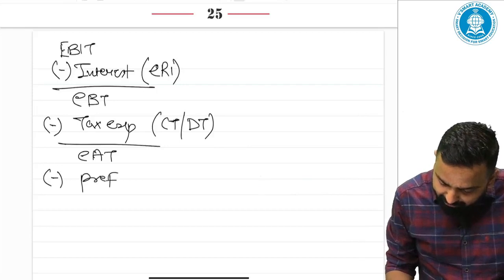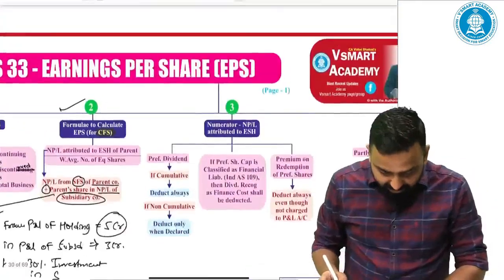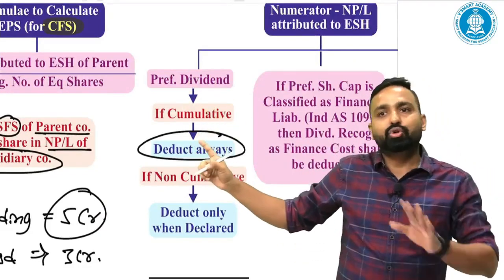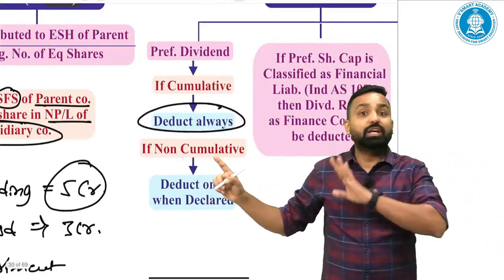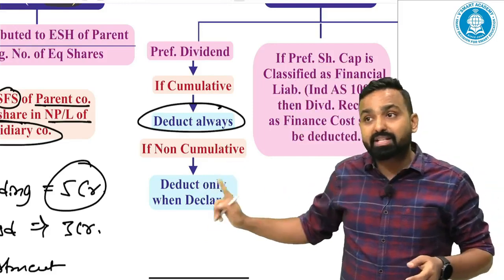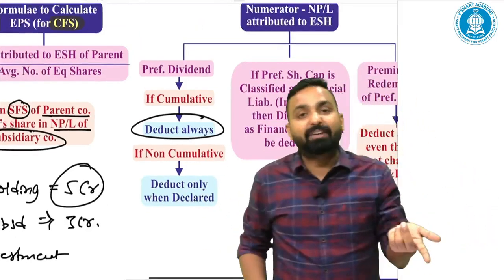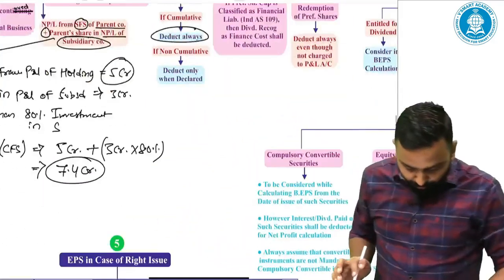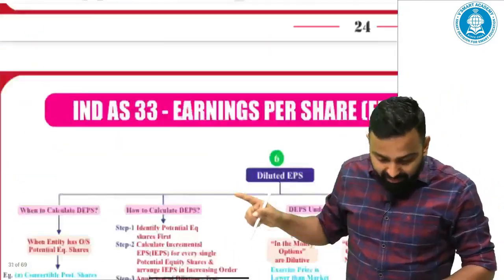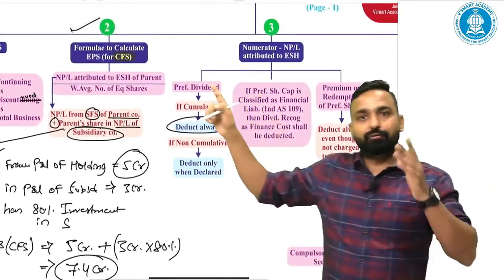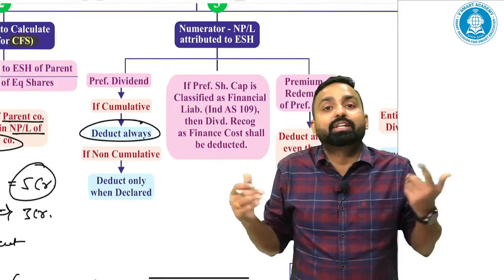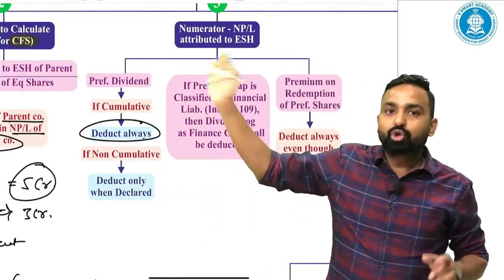After EAT, you should minus the preference dividend. If the preference shares are cumulative, then you always deduct the preference dividend. But if the preference shares are non-cumulative, the dividend is not mandatory to be paid, so you must deduct the dividend only when it is declared. In case of cumulative, deduct the dividend always. In case of non-cumulative, deduct the dividend only when declared. If the question does not specify whether they are cumulative or non-cumulative, always assume cumulative.